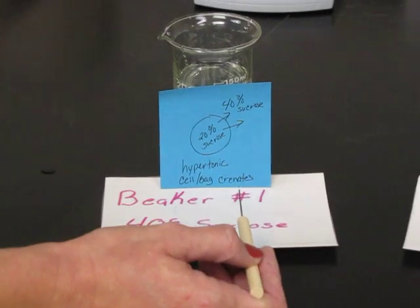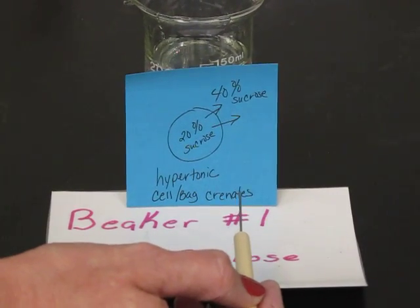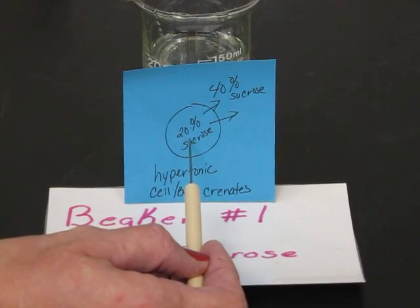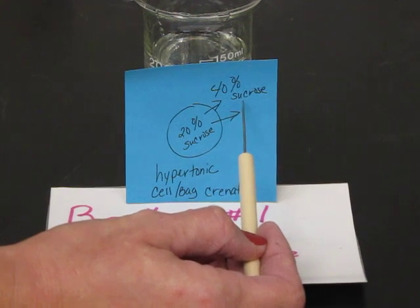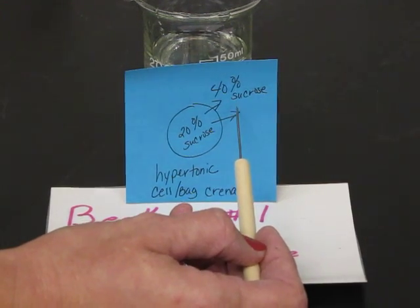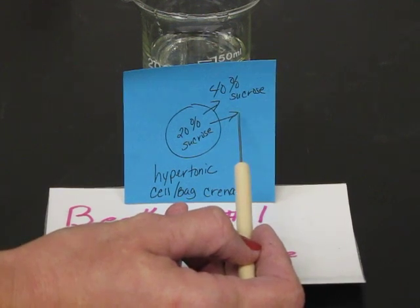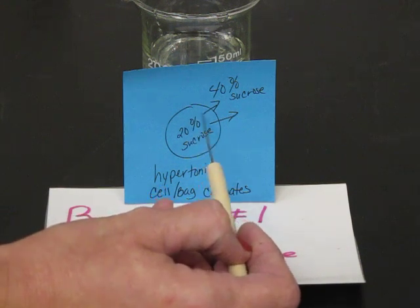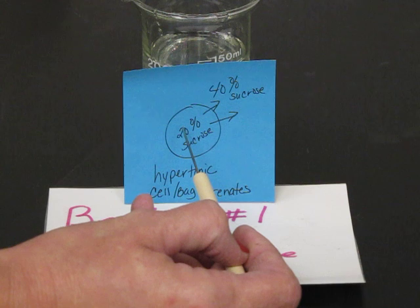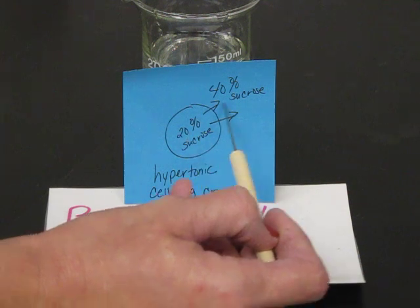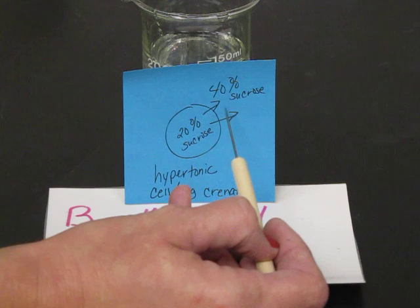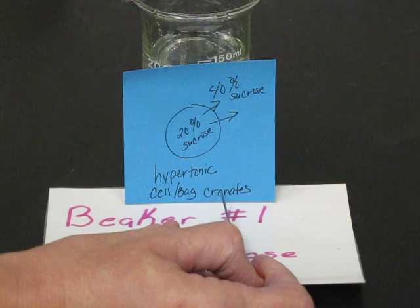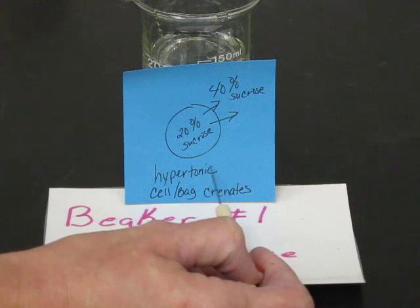What we see here is we placed our bag in there. The bag represents a cell and it contains 20 percent sucrose. It is sitting in a solution of 40 percent sucrose. Remember, water will move to cause homeostasis. We would like it to be equal on both sides. Water is going to dilute the solution. Water will leave the cell going from 20 percent to the 40 percent. Thus, we say that that cell is going to shrink, shrivel, and eventually crenate. This would be a hypertonic solution.